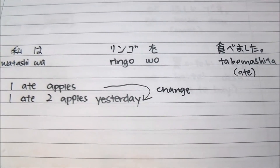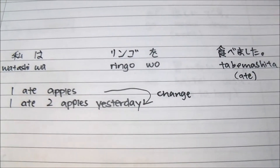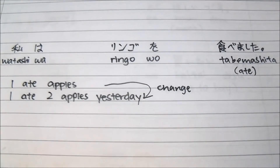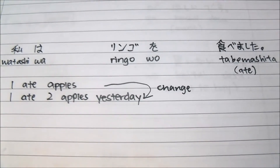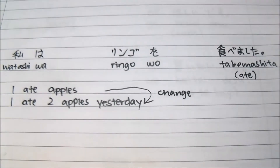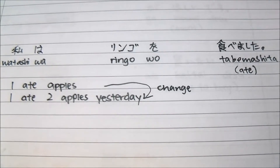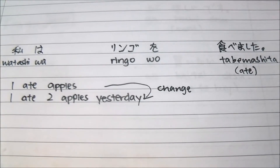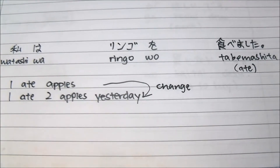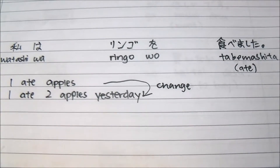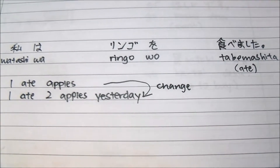You have already learned about sentence structure — the subject, object, verb order in lesson one, part one. So you learned 'Watashi wa ringo wo tabemashita.' I just changed it to 'tabemashita', which means ATE — the past tense.